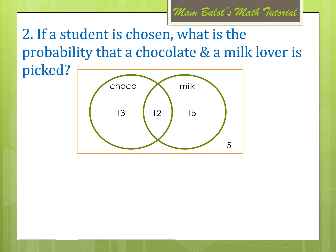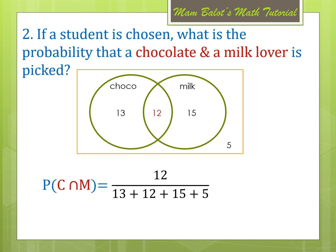Question number 2: if a student is chosen, what is the probability that a chocolate and milk lover is picked? Since we have the word AND, we are referring to the intersection of the two sets. The probability of C intersection M would be 12 over all the numbers in the diagram. So, we have 12 over 45, which can be reduced to 4 over 15.